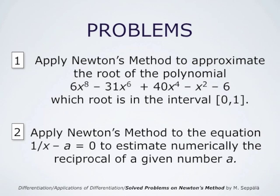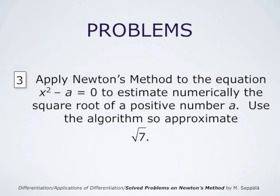The problems to be considered are the following. First, apply Newton's method to approximate the root of the polynomial 6x^8 minus 31x^6 plus 40x^4 minus x^2 minus 6, which root is in the interval from 0 to 1. In the second problem, apply Newton's method to the equation 1/x minus a equals 0 to estimate numerically the reciprocal of a given number a. In the third problem, apply Newton's method to x^2 minus a equals 0 to estimate numerically the square root of a positive number a.